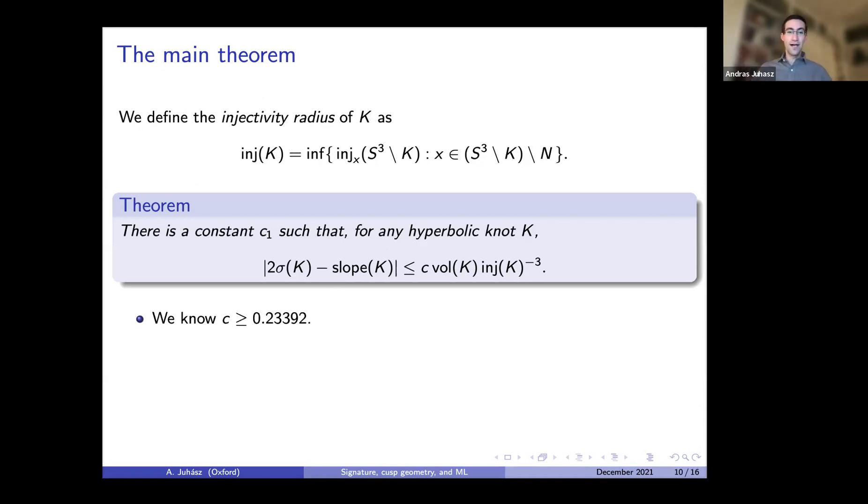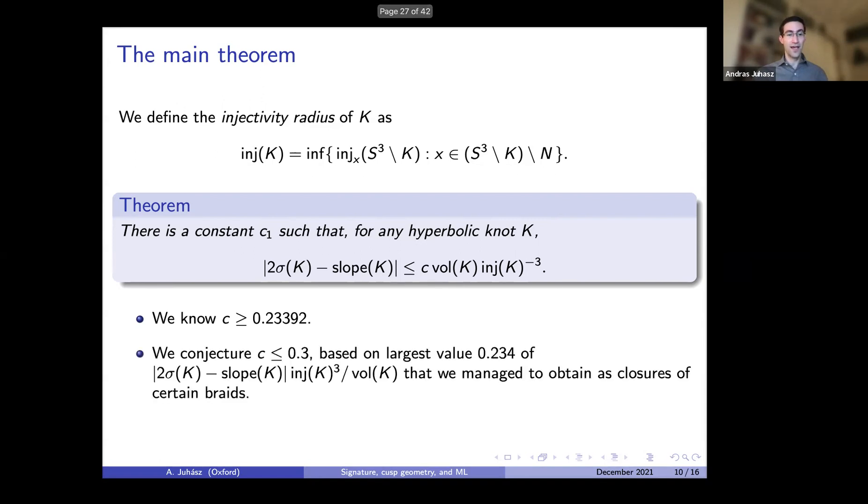What do we know about this constant? We know that it is at least 0.2339. But more interestingly, it seems that this constant is not very large. The largest value we managed to obtain using highly twisted knots, namely some family of certain braids, was 0.234. So we conjecture that maybe C is at most 0.3. This is fairly small, but it would be very interesting if one could show that we have this constant.